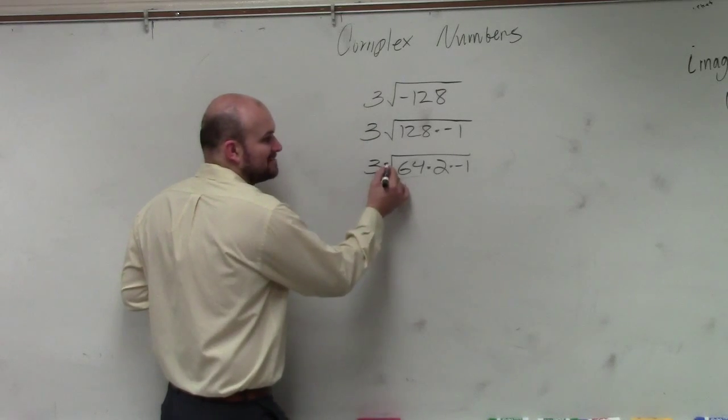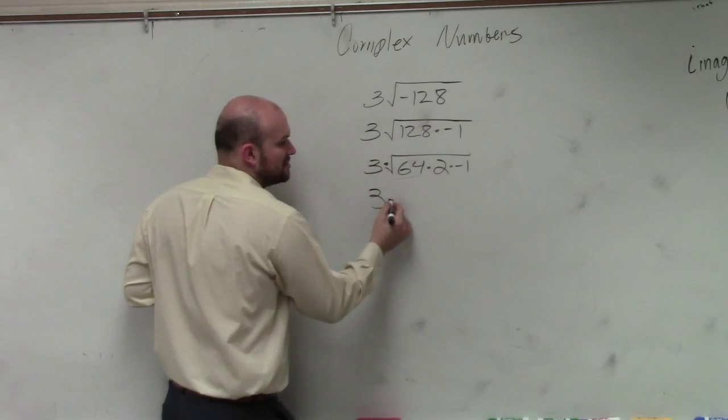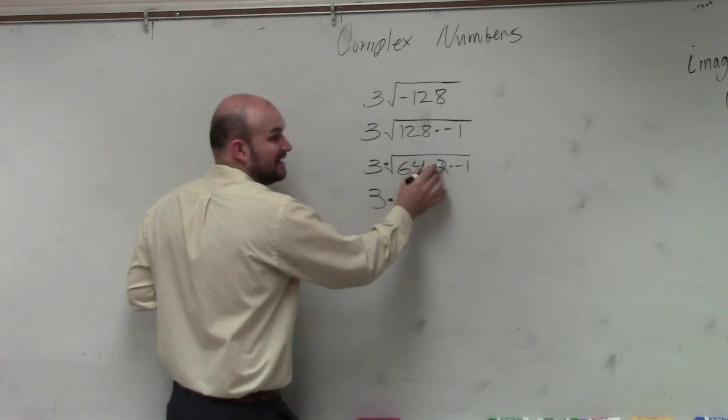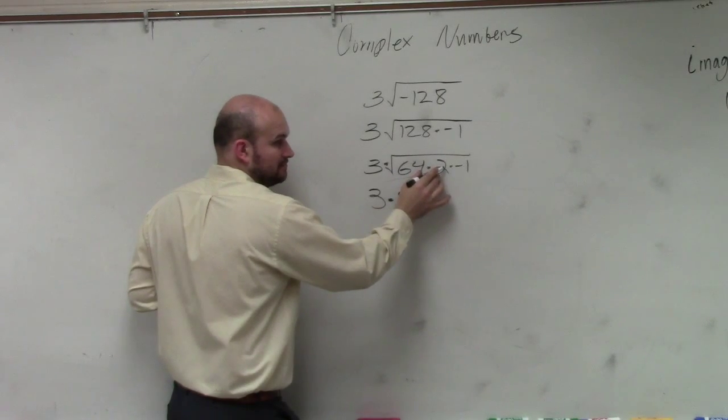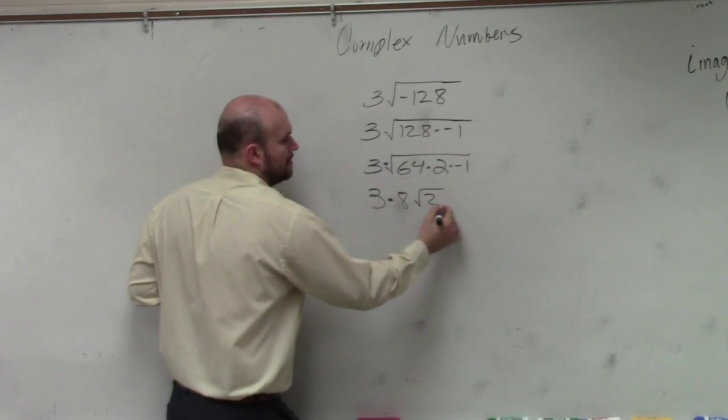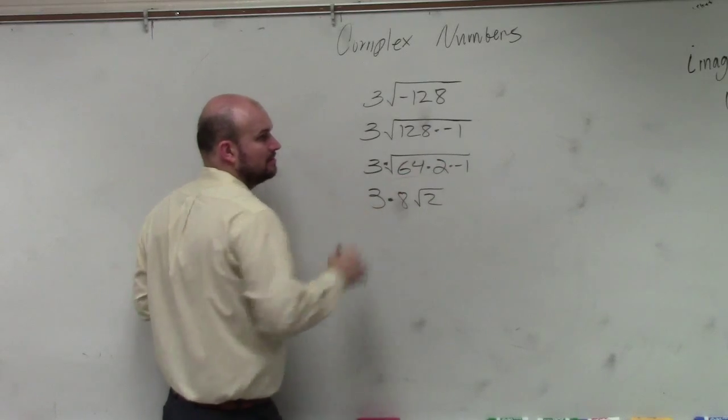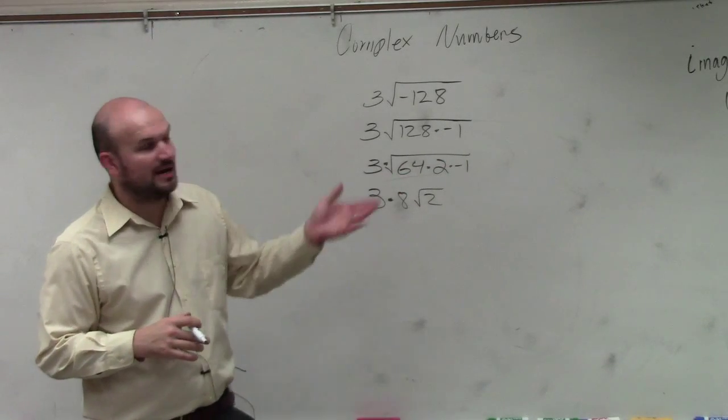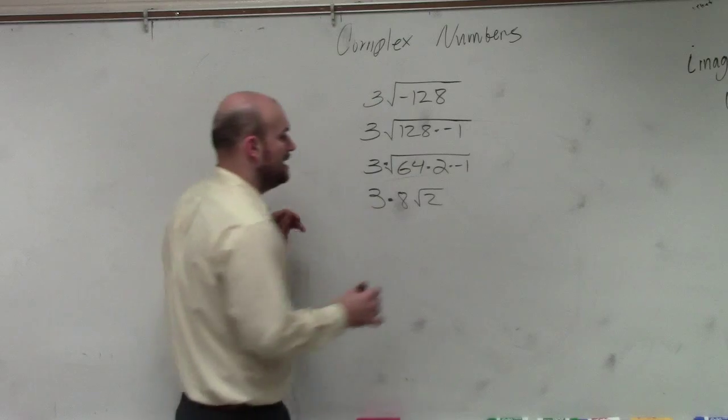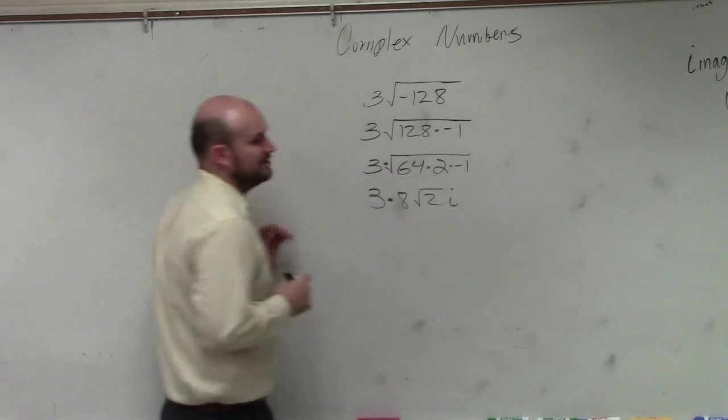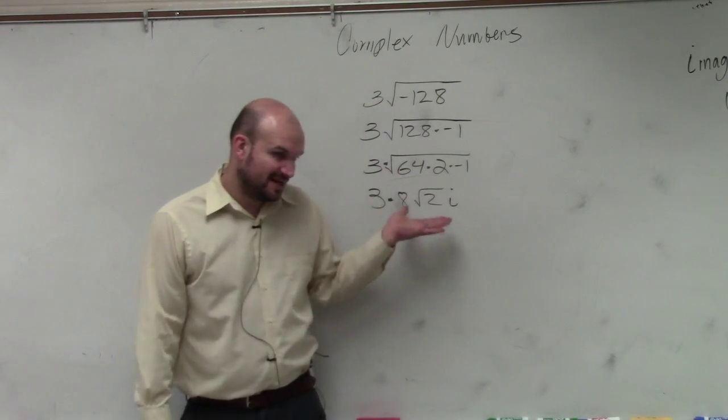So that is 3 times this, right? 3 times 8. Can I take the square root of 2? No. Can I take the square root of negative 1? No, but I can rewrite that as i. Now, I want to let you guys know, this is perfectly fine, and it's correct. However, in math, a lot of students will make mistakes by putting the square root over i.